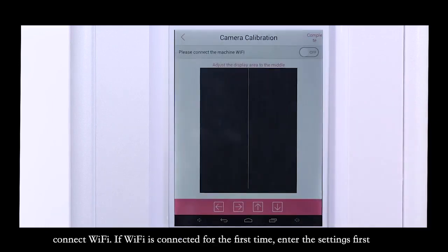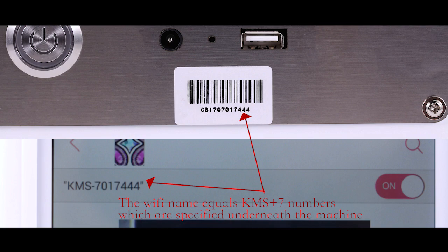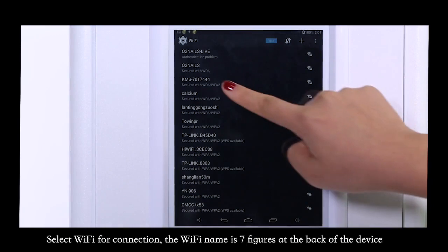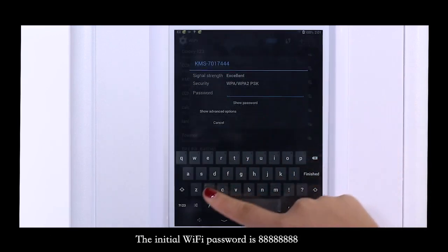Connect Wi-Fi. If Wi-Fi is connected for the first time, enter the settings first. Select Wi-Fi for connection. The Wi-Fi name is 7figurex at the back of the device. The initial Wi-Fi password is 88888888.